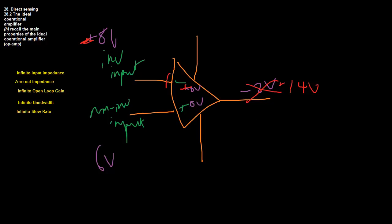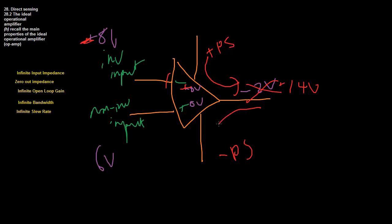Over here we have a positive power supply and over here a negative power supply. We need both because, as you saw, the output could be negative 2 volts or it could be 14 volts. The output can be either positive or negative, but not both at the same time. Sometimes the current will flow in the positive direction and sometimes in the negative direction, so the power supply needs to be both positive and negative.